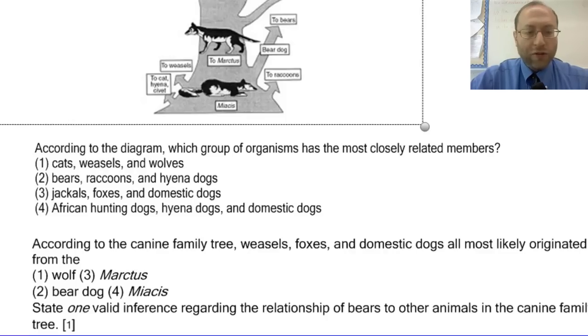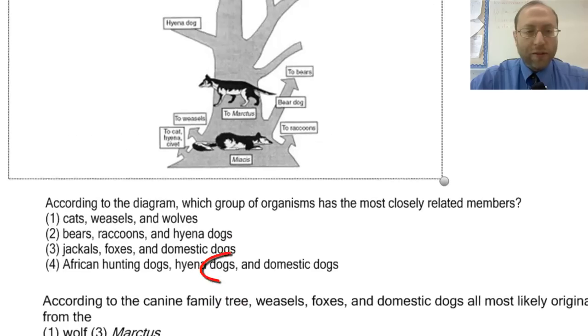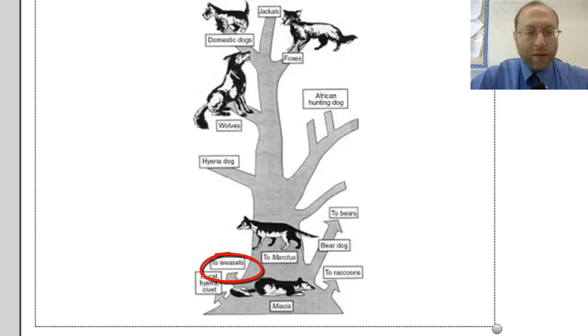With the first question: according to this diagram, which group of organisms had the most closely related members? So let's look at this. Cats, weasels, and wolves. The weasels are over here on the bottom left, and so are cats, hyenas, and it's hard to read from here, it's civet, I think. Wolves are all the way up there towards the top.